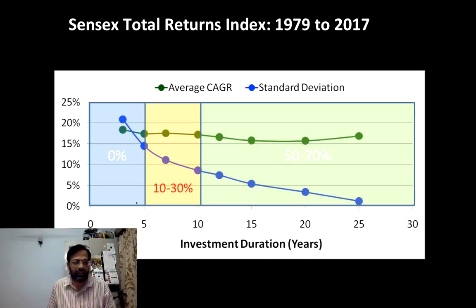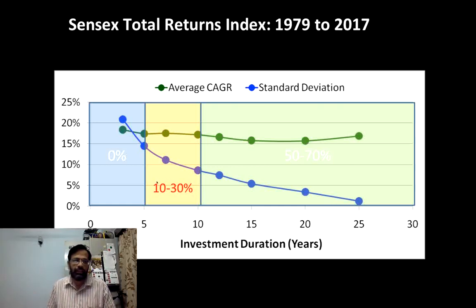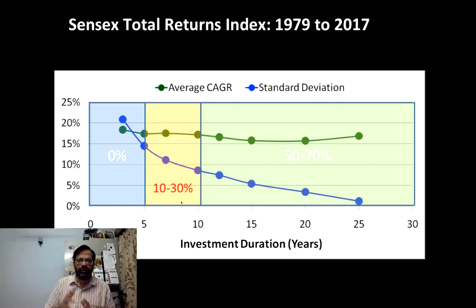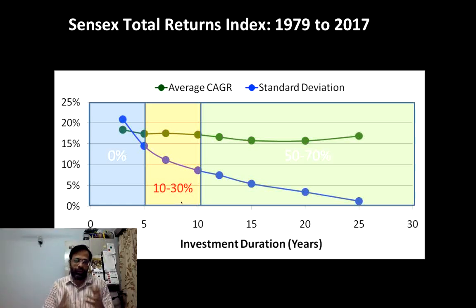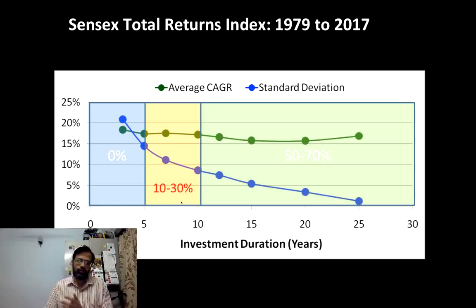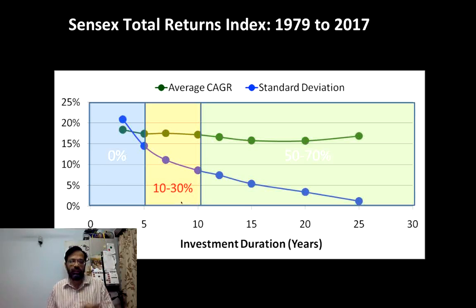I would define short-term as anything within 5 years, long-term as anything above 10 years, and intermediate-term as somewhere between 5 to 10 years. Of course these are thumb rules which we have manually inserted — you can argue they are different, but you must have your own set of rules to go with. That's how you can use return and volatility to define what is short-term and what is long-term.